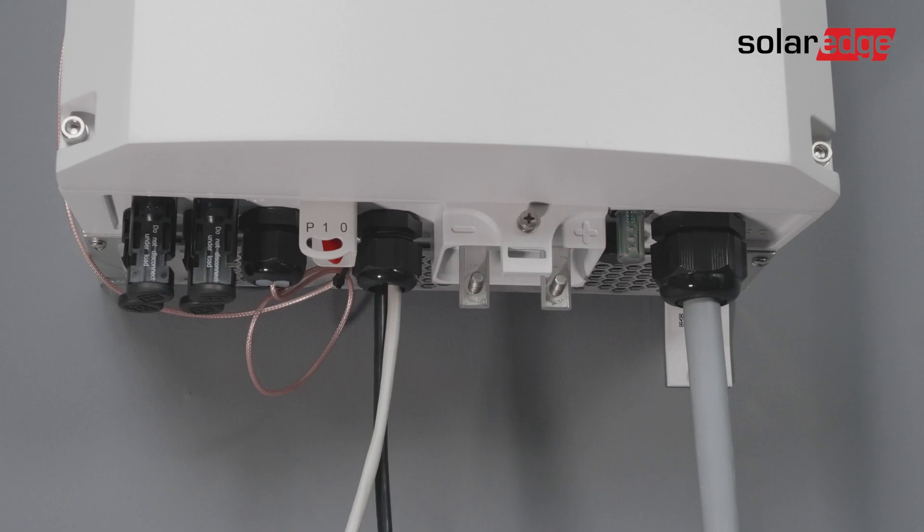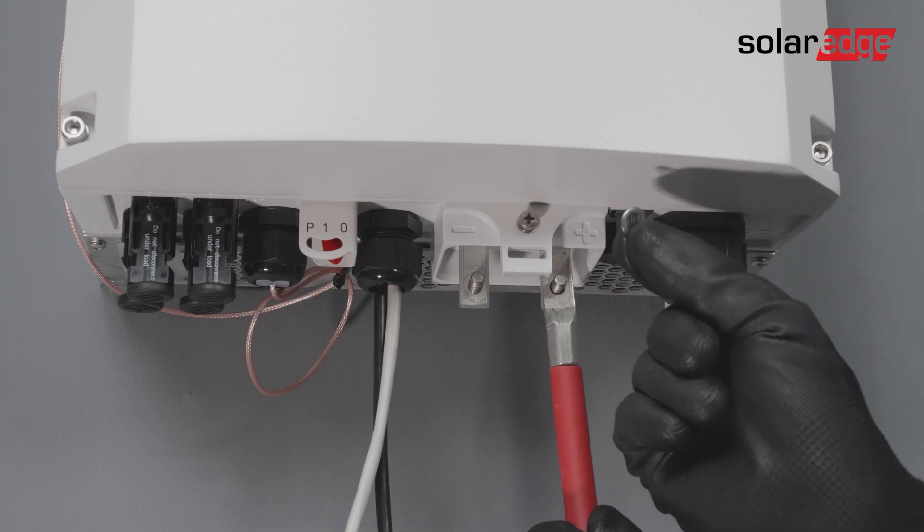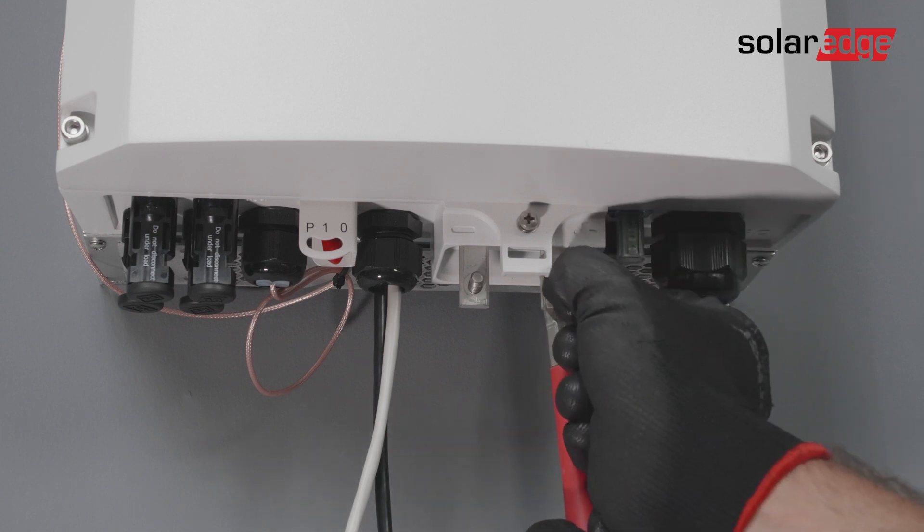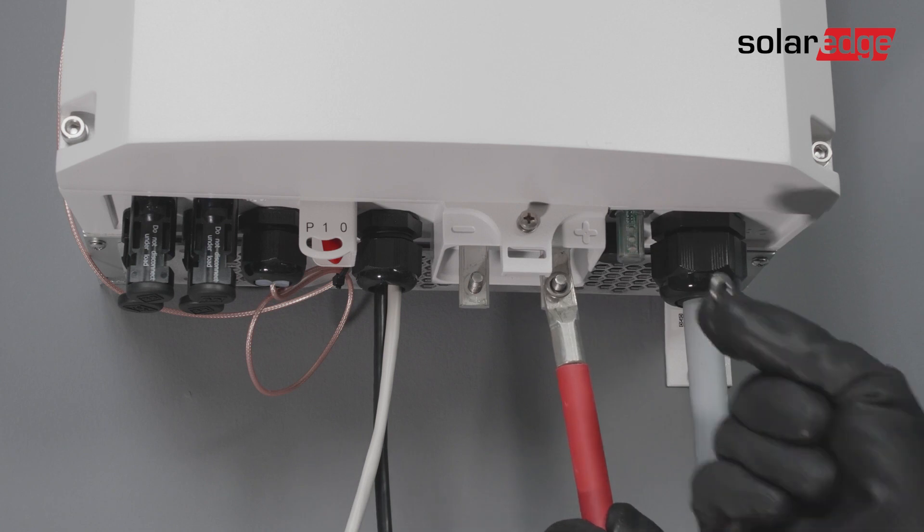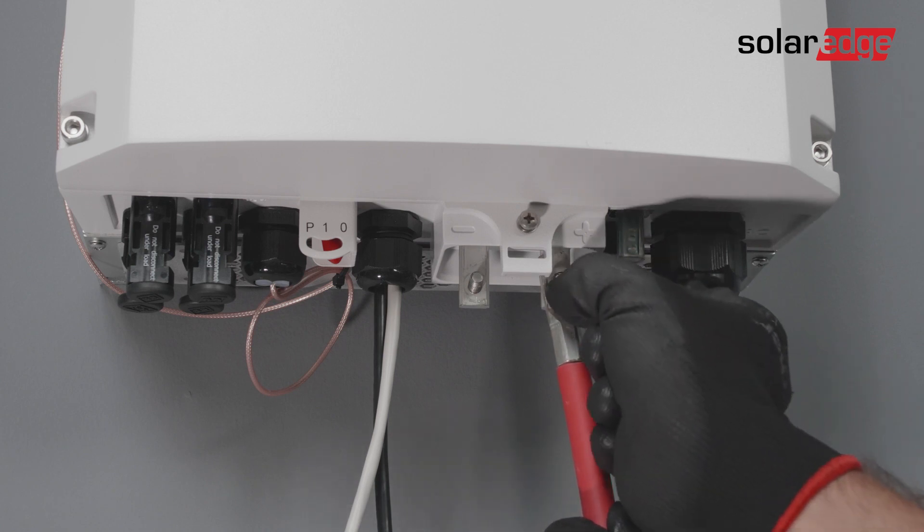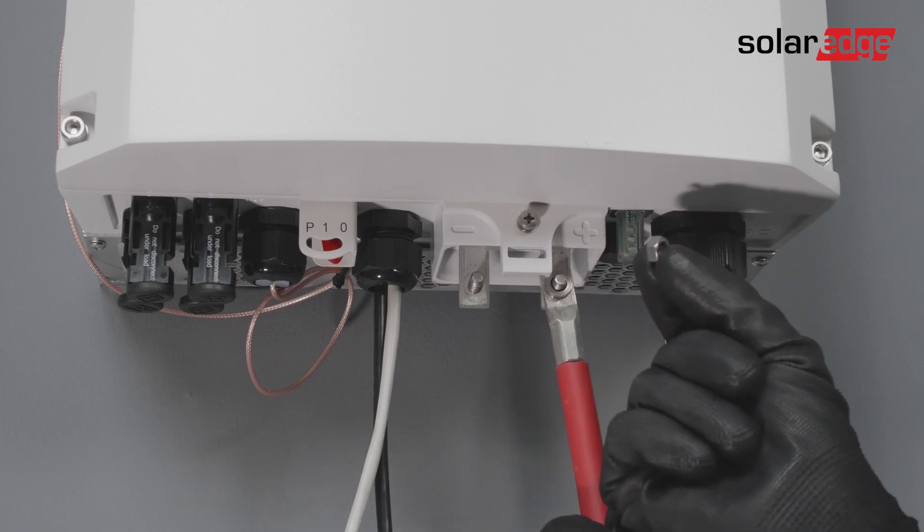Now, connect the DC cables with the supplied screws. Please note the polarity as noted also on the inverter. The correct assembly order of the washers is to first assemble the flat washer, then the spring, and finally place the bolt.